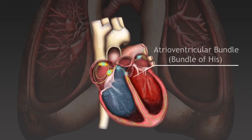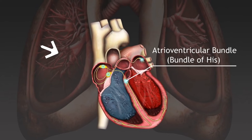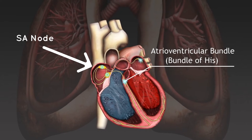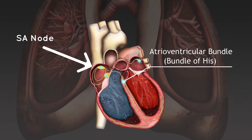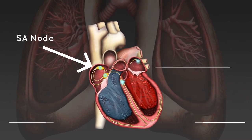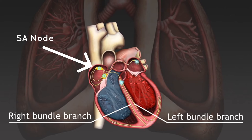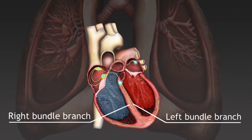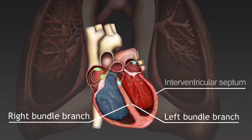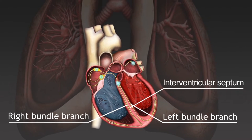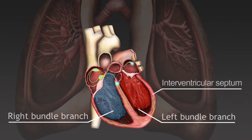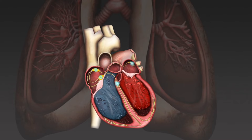5. The SA node sends another signal to the atria to contract, which starts the cycle over again. This cycle of an electrical signal followed by a contraction is one heartbeat.